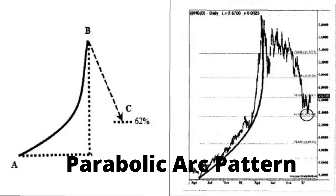Most of these parabolic arc patterns go straight up and then come straight down. Other examples of this market type are the Nasdaq bullish markets during 1999 to 2000 and gold prices from 1977 to 1982.